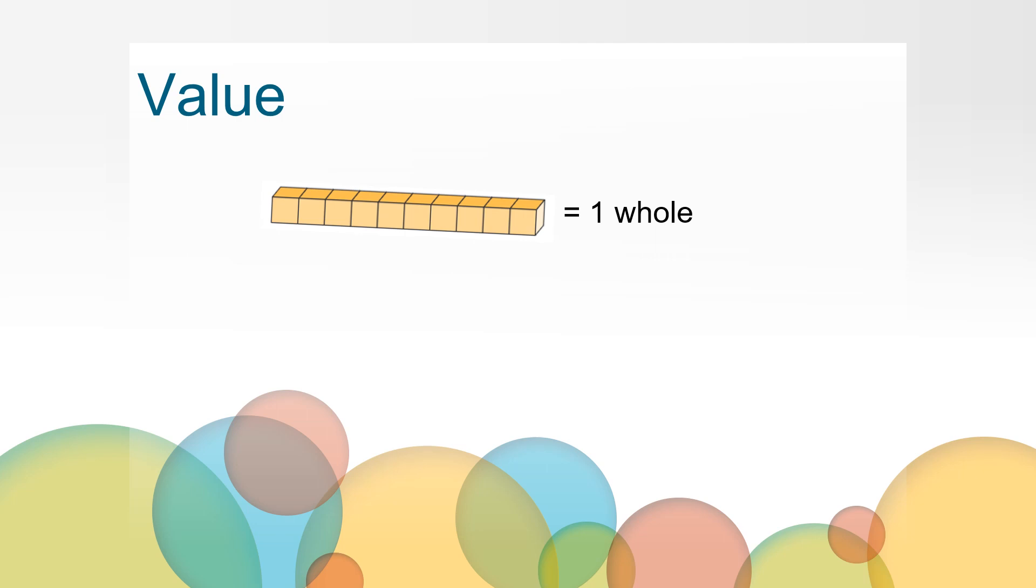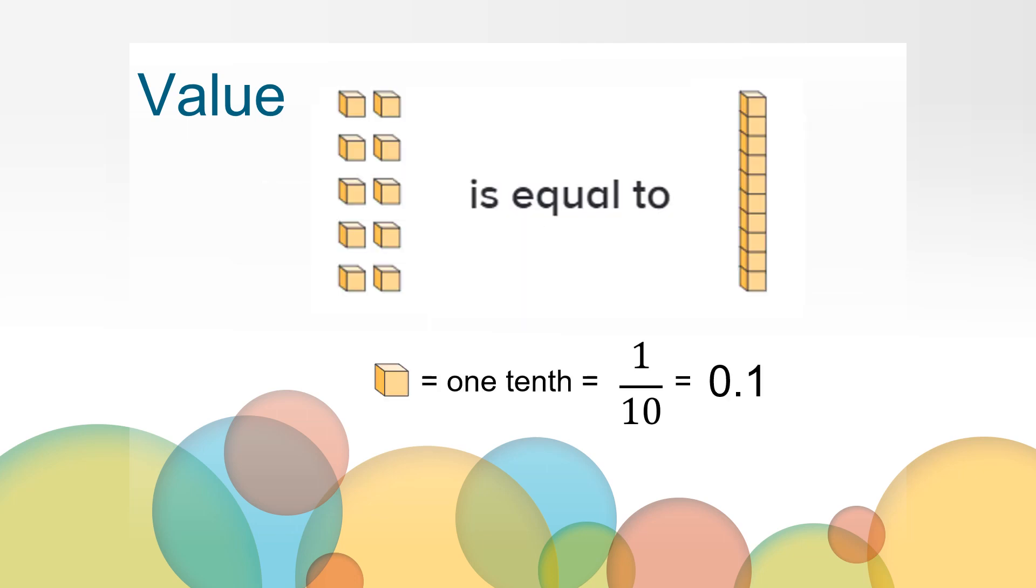If this block has a value of 1 or 1 whole, what is the value of this block? Since it takes 10 of the small cubes to make the rod, then 1 cube is 1 tenths of the whole. We can write it as a fraction or as a decimal. The first place after the decimal is the tenths.